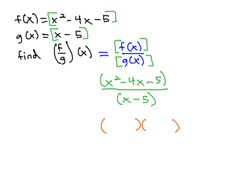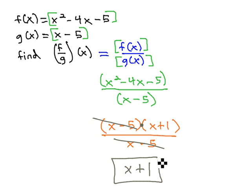So, let's see if we can factor the numerator. Multiplies to -5 and adds to -4. That's -5 and positive 1 over x - 5. And now, that we have factors that are multiplied, we can reduce that entire factor that's multiplied, leaving just x + 1.